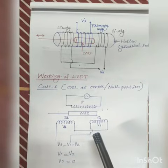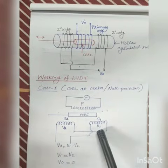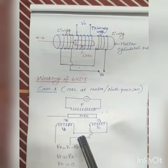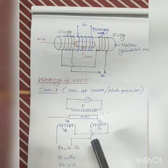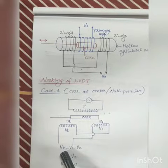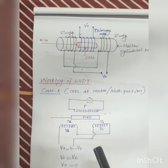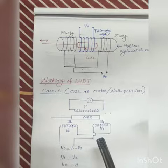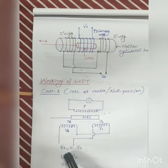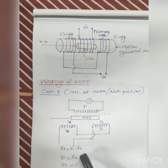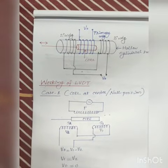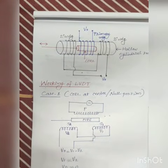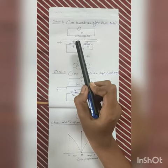Equal EMF gets induced in both the secondary coils, that is V1 is equal to V2. Due to this, the net EMF V0 of two secondary coils becomes zero. We know that V0 is equal to V1 minus V2. In this case V1 is equal to V2, therefore the output voltage V0 becomes zero.